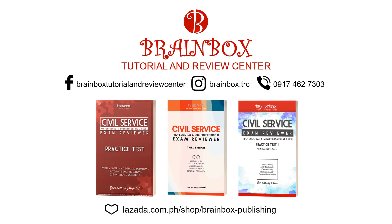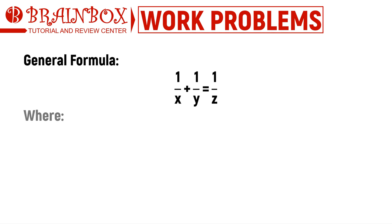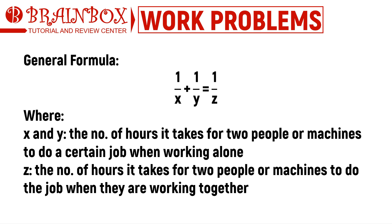We will use the formula shown here to solve work problems. In this formula, x and y represent the number of hours it takes for two people or machines to do a certain job when working alone. Z represents the number of hours it takes when they work together. In one hour, person x does one over x of the job alone, person y does one over y alone, and together they do one over z of the job.